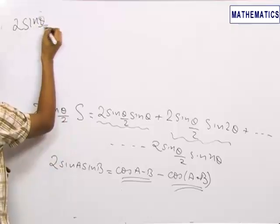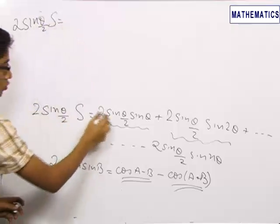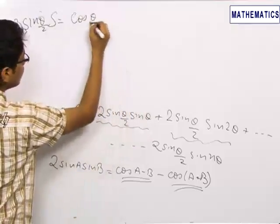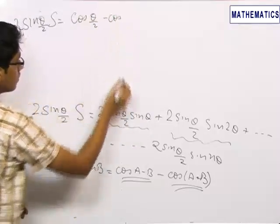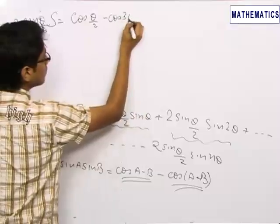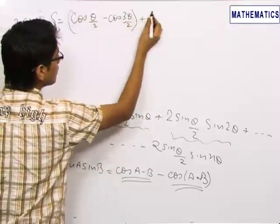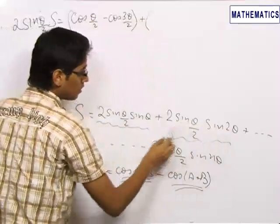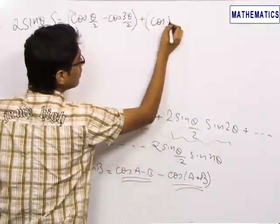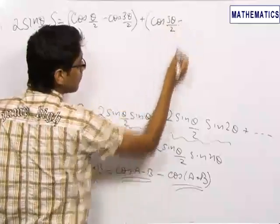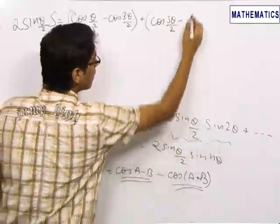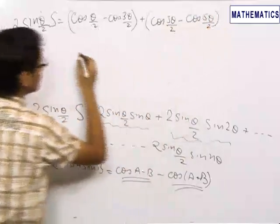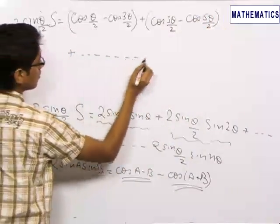We write 2·sin(θ/2) × S = [cos(A − B) − cos(A + B)], which for the first term gives cos(θ/2) − cos(3θ/2). Similarly, the second term gives cos(3θ/2) − cos(5θ/2). All subsequent terms follow the same pattern.